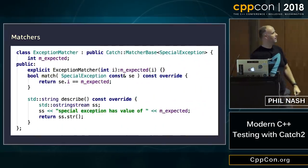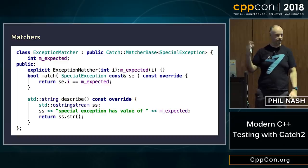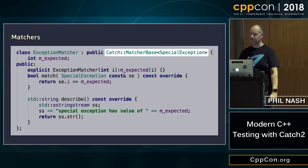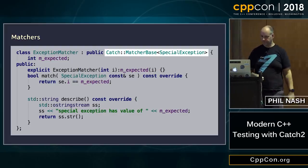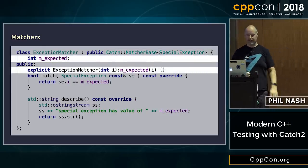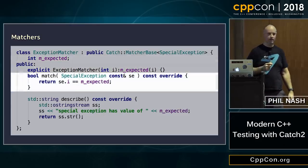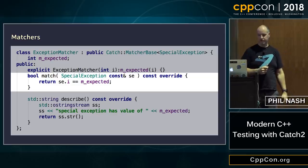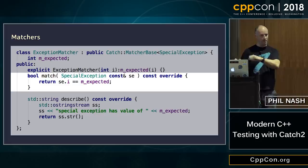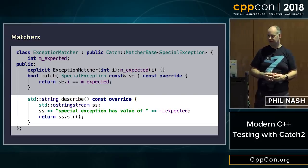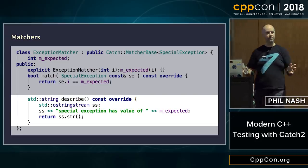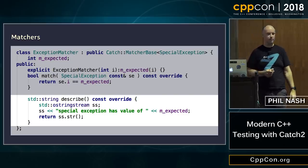For custom matchers, all you have to do is write a class with a couple of overloads. You derive from a base class templatized on the type you're matching — in this example, a special exception type. Then you have a constructor that takes the thing you want to test against and stores it as a member variable. The first overload is 'match', which takes the thing being tested to compare with what you're holding — that's where your matcher logic goes. Then 'describe' prints out what happened in the event of a failure.